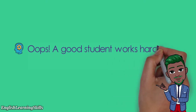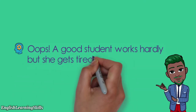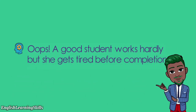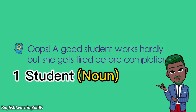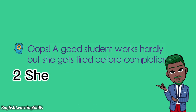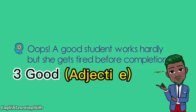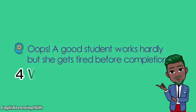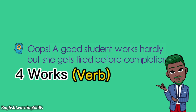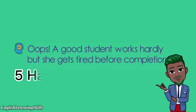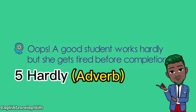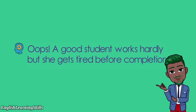Just figure out how to keep in mind parts of speech. Here is the trick sentence: 'A good student works hardly, but she gets tired before completion.' In this sentence, we have all parts of speech. Let's learn them in the easiest way with examples: one — 'student' is a noun; two — 'she' is a pronoun; three — 'good' is an adjective; four — 'works' is a verb; five — 'hardly' is an adverb; six — 'before' is a preposition.